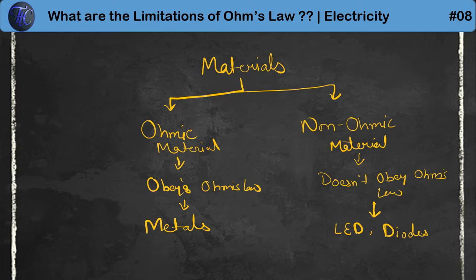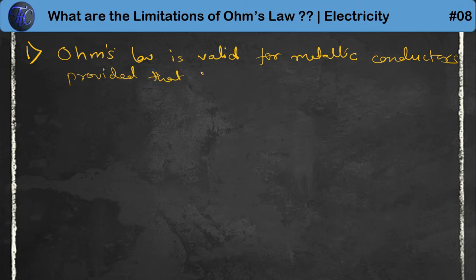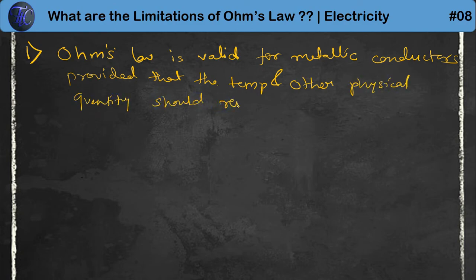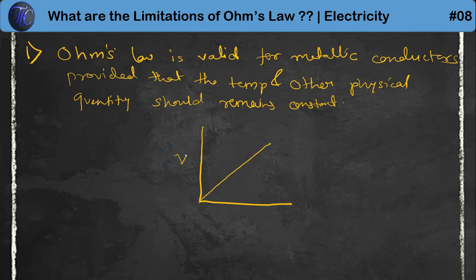Now let us see the limitations of Ohm's Law. First limitation: Ohm's Law is valid for metallic conductors provided that the temperature and other physical quantities remain constant. Only then will a material obey Ohm's Law and be known as an ohmic material. The graph of a material whose temperature and other physical quantities are constant is a linear graph — this is I and this is V — and this graph is for ohmic material.